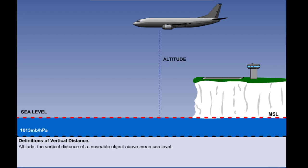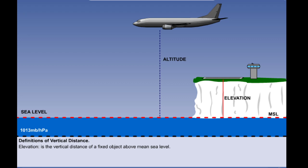Altitude, when used on its own without any qualifying prefix such as density altitude or pressure altitude, means the vertical distance of a movable object above mean sea level. Sometimes it can be referred to as true altitude, in which case it means just the same thing. Elevation uses the same datum as altitude but the difference is that elevation is the vertical distance of a fixed object above mean sea level. By fixed object we normally mean the ground.